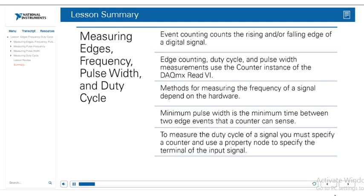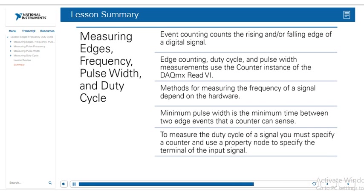In conclusion, in this lesson we have learned about the basics of using counters to analyze a digital signal. We first talked about edge counting, then different ways to measure frequency, then measuring pulse width, and finally measuring duty cycle. Remember, in addition to specifying the counter you want to use, you must also specify the terminal that contains the digital signal you want to measure.